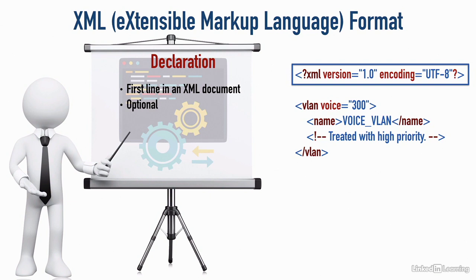The declaration is optional. If we do use it, we're saying here's the type of information contained in this XML document. As you can see on screen, it specifies the version of XML we're using and the type of encoding. Here we're saying version 1.0 and encoding UTF-8 — that's an 8-bit encoding scheme that lets us represent all of our Unicode characters.